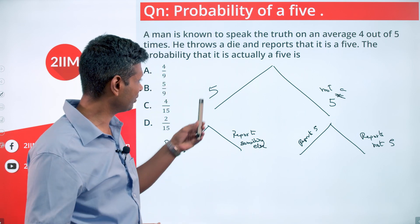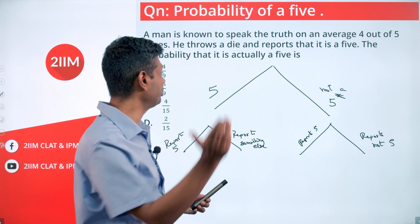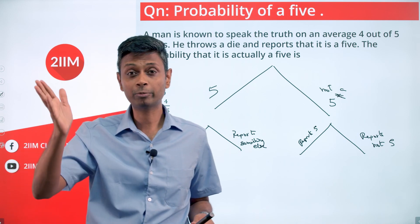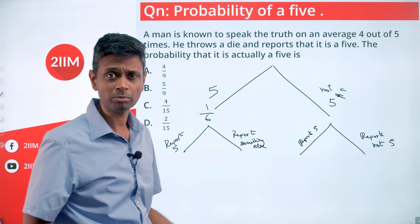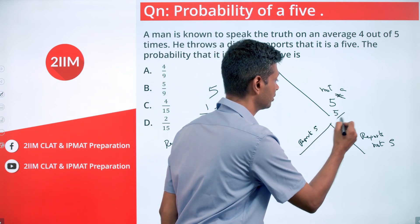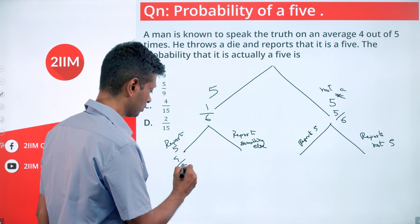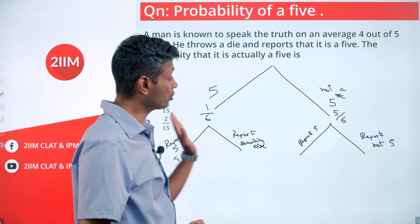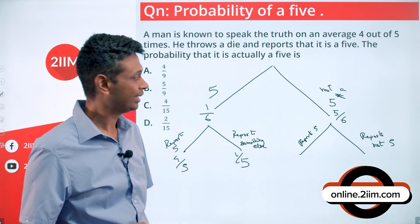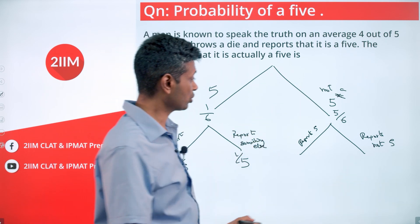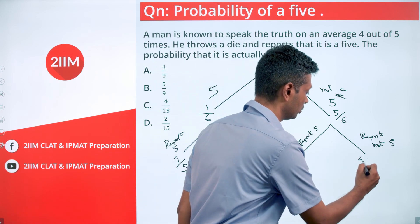Given that it's a five, the probability he reports a five is 4/5. The probability he reports something else is 1/5. The probability of it being a five is 1/6. The probability of it not being a five is 5/6. Now it is methodical: given it is a five, the probability he reports a five is 4/5; reports something else is 1/5. Given it is not a five, the probability he reports five — meaning he is lying — is 1/5; he reports not five is 4/5.